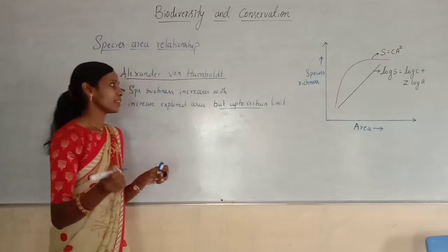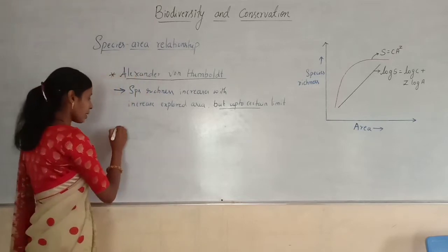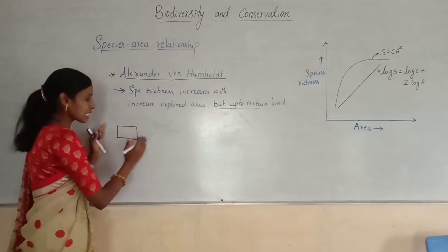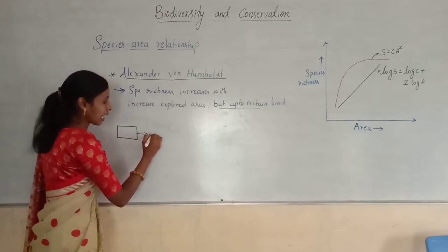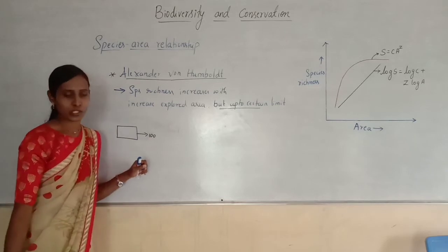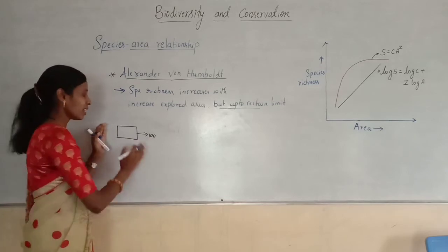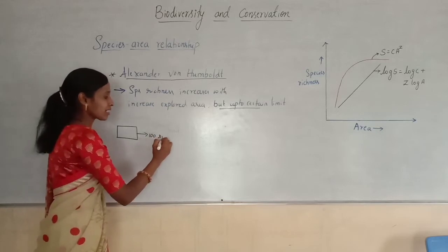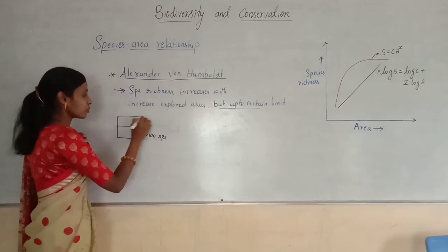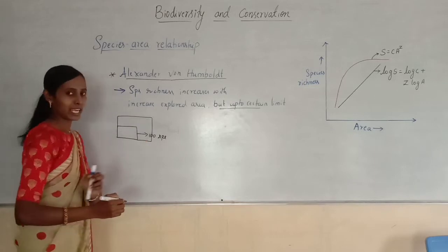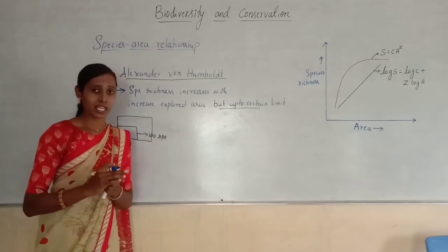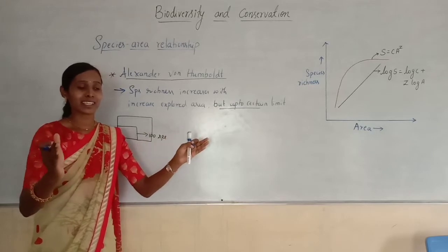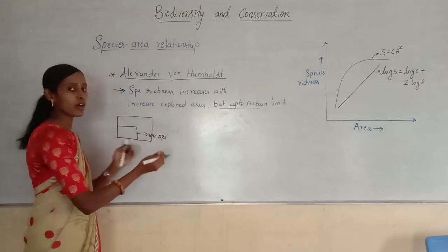Let us take one example to understand this. Consider one particular geographical area — in this land area, there are about 100 different varieties of species. So what happens if you increase the land area, the geographical area? When the land area is increasing, you are providing space for the evolution of new species.